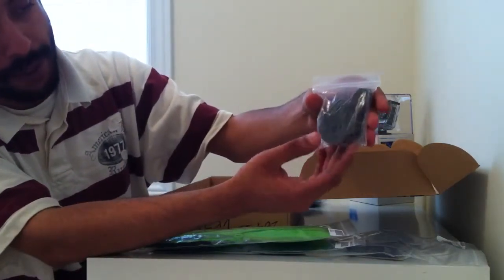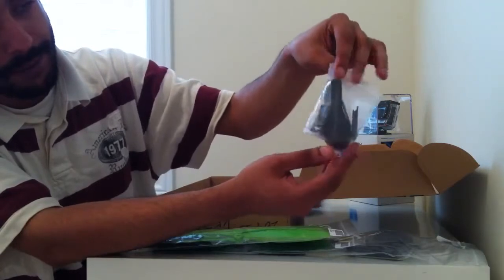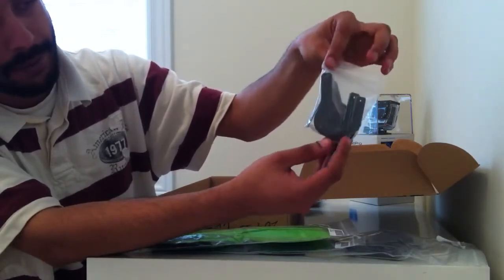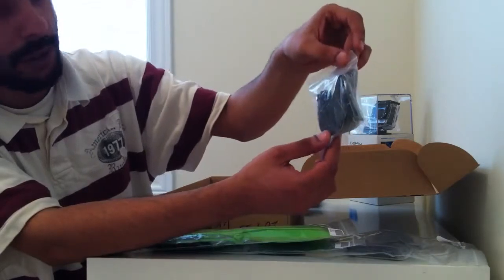Next, we have the landing plate for the motors. Since it's an Octocopter, there's quite a few of them.